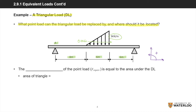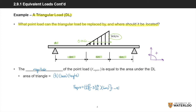For a triangular DL, the magnitude of the point load F-equiv equals the total force or area under the DL. Recall that the area of a triangle is one half times base times height. To create a point load equivalent to the DL, we multiply the distributed force of negative 3 kN per meter with the 6 meter length, and since we are dealing with a triangle, we multiply the entirety by one half. This gives us an answer of negative 9 kN.